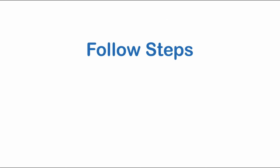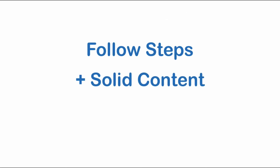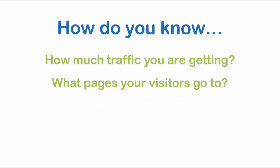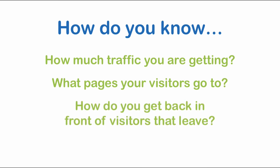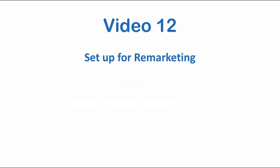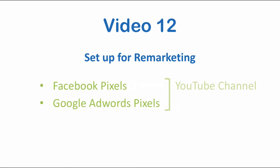Following the steps in this video, provided you're putting solid content on your site, will help bring traffic to your site. But how do you know how much traffic you're getting, what pages that traffic is going to, or how to get back in front of visitors that came but left right away? That comes down to tracking. In video 12 — the last one in this video series — we're going to install various tracking codes using Google Tag Manager, set up Google Analytics and Google Search Console, and get you set up for remarketing by inserting Facebook pixels and Google AdWords pixels.